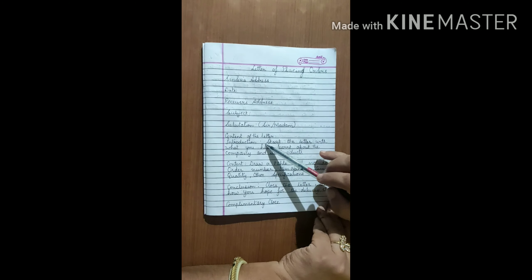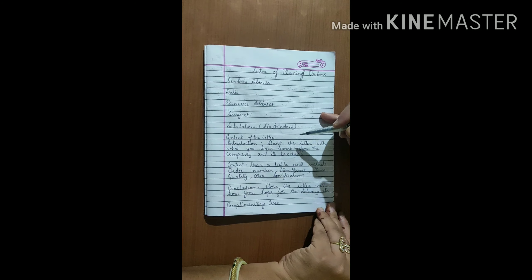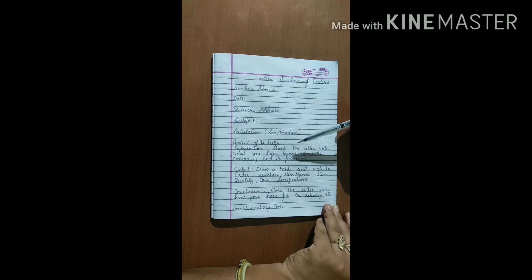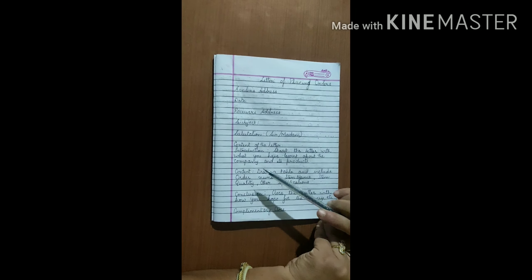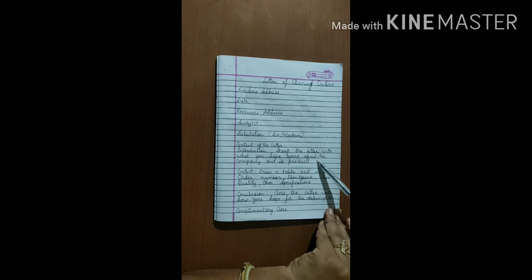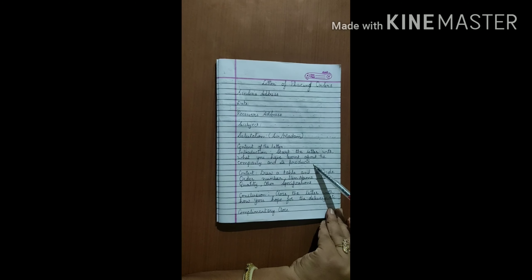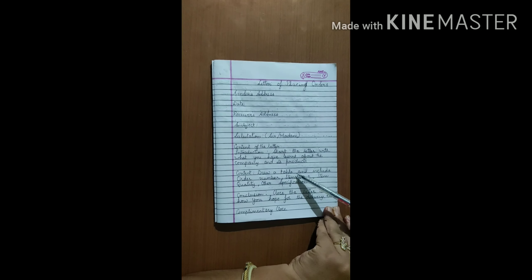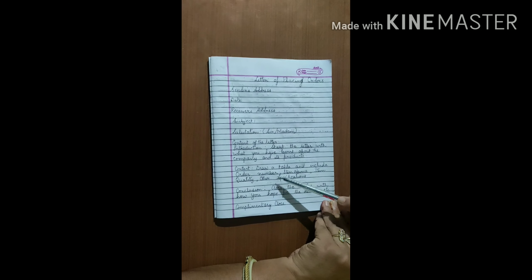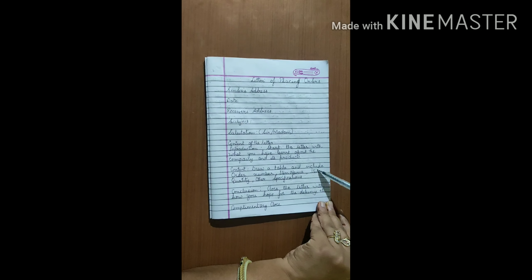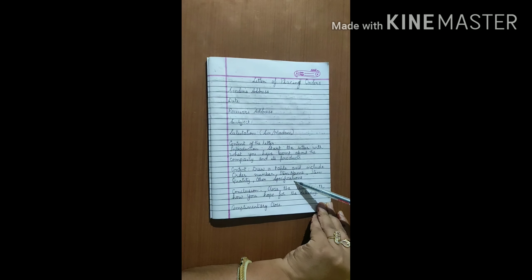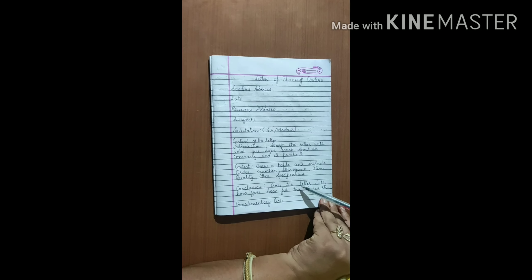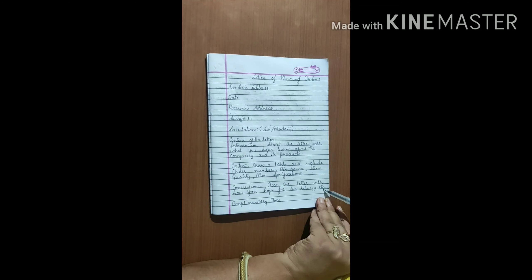Now we will start with the content of the letter, which will have a little change from the letter to the editor. In your introduction, you have to write what you have learned about the company and its products. Then you leave one line and write the content. In the content, you will drop a table and include order number, item name, item quality, and other specifications. You leave one line and in your conclusion, you are going to write how you hoped for the delivery, etc.